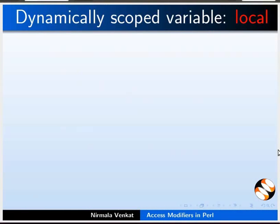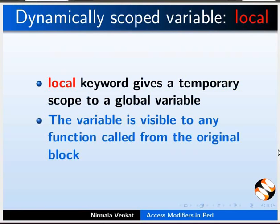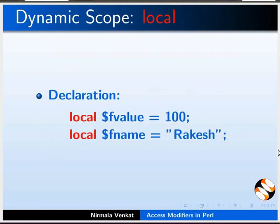Next, we will see about dynamically scoped variables in Perl. The Local keyword gives a temporary scope to a global variable. The variable is visible to any function called from the original block. You can declare a local variable as: local $fvalue = 100; or local $fname = "rakesh";